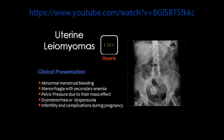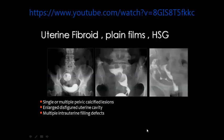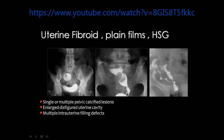Uterine fibroids can be diagnosed by plain X-ray if you see a calcified mass in the pelvis of a female patient — the most common diagnosis for this appearance is uterine fibroid. This is also a uterine fibroid incidentally discovered during intravenous urography for urinary symptoms. On hysterosalpingography you can see that the uterine cavity is enlarged, with filling defects inside — this is the submucous fibroid. Alternatively, there may be enlargement of the uterine cavity with irregular borders secondary to fibroids in the wall of the uterus — what we call interstitial fibroids.